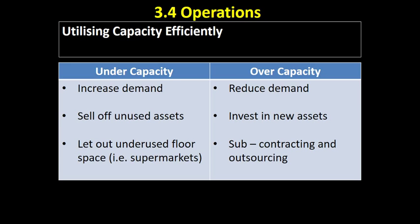In terms of over-capacity — working at a very high capacity — we're going to look to reduce demand somehow. If we've got a very popular product that's continually selling out, that might indicate our price point is too low. We can take out some of that demand and manage it better by raising the price slightly, removing some consumers. We may also invest in new assets such as a new factory and new workers, or subcontract work out to third parties or outsource certain non-essential functions to other organisations.